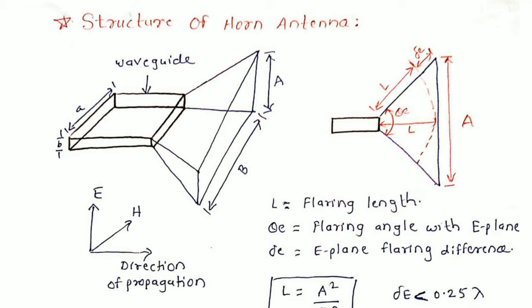We can see in the diagram that there are three axes: the vertical axis is capital E, which shows the orientation of the electric field; capital H shows the direction of orientation of the magnetic field; and the horizontal direction shows the direction of propagation of the wave. The right side of the diagram shows the cross section of the horn antenna. Capital L is the flaring length, and theta E is the flaring angle with the E plane, that is the electric plane.